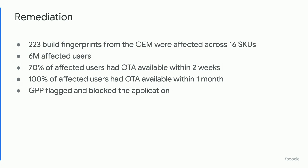So what do you do when you find something like this? We found this the very first day that OEM began submitting to BTS, but because BTS was newer, it had already gone out in some devices in the wild. It ended up affecting 223 different build fingerprints across 16 different SKUs with about 6 million affected users. What gave us hope is that 70% of those affected users had an OTA update available within two weeks, and 100% had one within one month. If a user had Google Play Protect enabled, while GPP can't remove the app due to it existing on a read-only file system, it was able to disable the application.